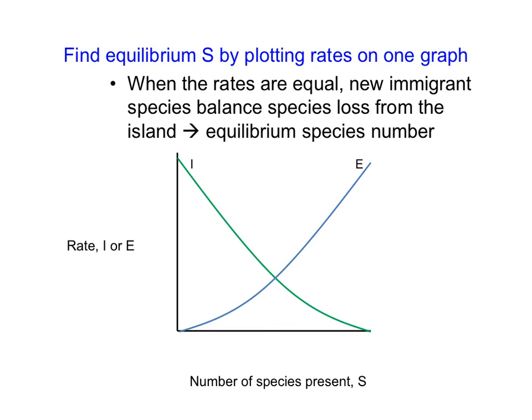Taking these two rates together — immigration rate shown in green (I) and extinction rate in blue (E) — and combining them generates an intersection of the two curves. Where those two rates intersect defines the number of species on that island when the system is at equilibrium: the rate at which a new species shows up equals the rate at which an old species goes extinct. We call this equilibrium species number s-hat.